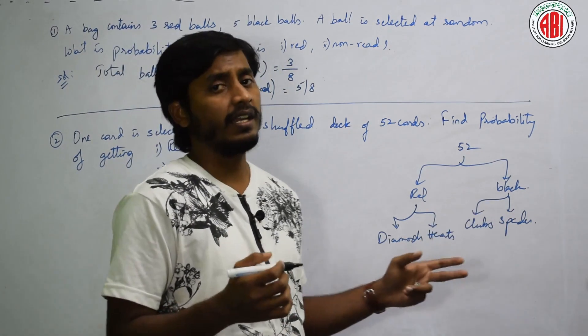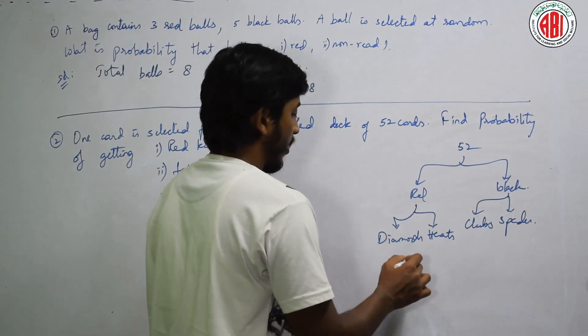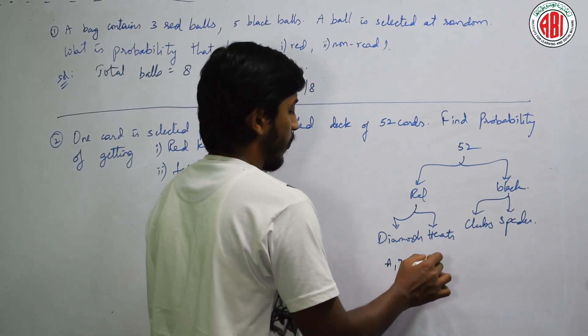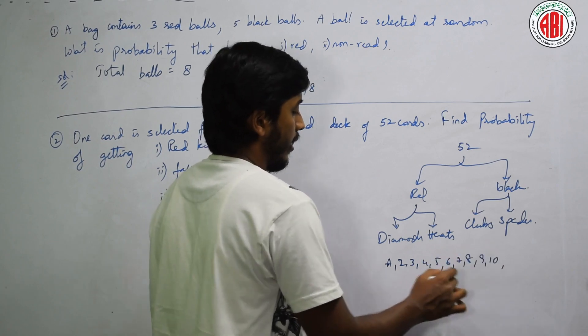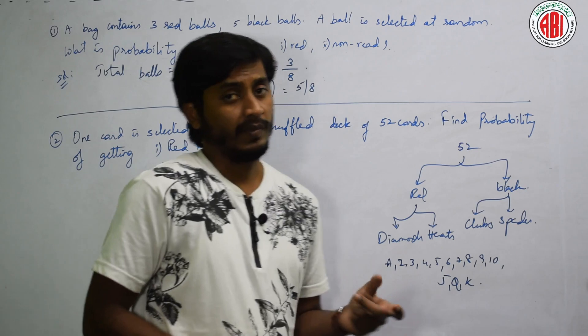Each and every will have 13, 13, 13, 13. What are those 13? A, 1, I mean 2, 3, 4, 5, 6, 7, 8, 9, 10 and J, Q, K. Yes?